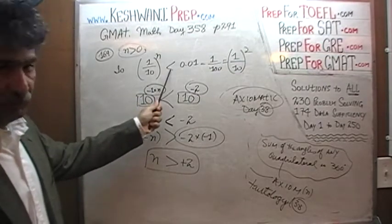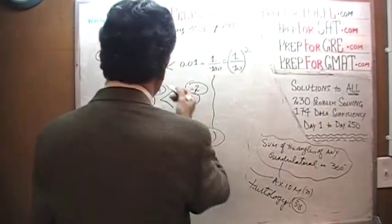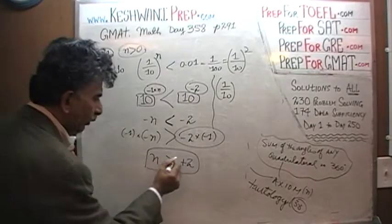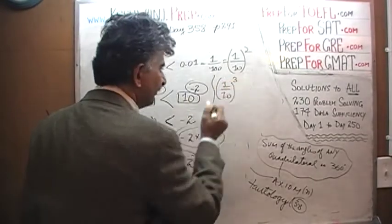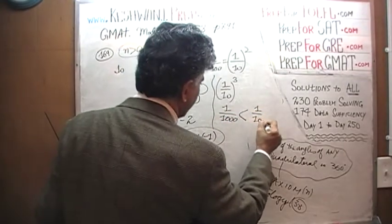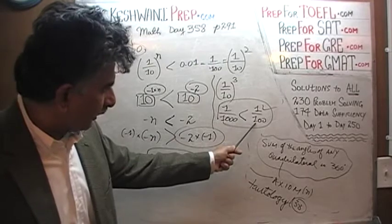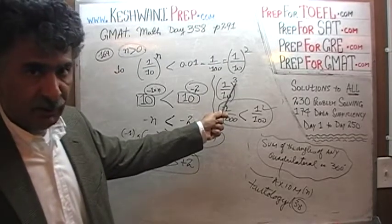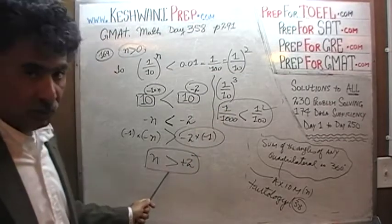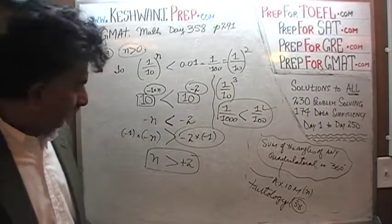Because if N happens to be more than 2, then the original inequality will be true. For example, if N is 3, then 1 over 10^3 is 1 over 1,000, and 1 over 1,000 is in fact less than 1 over 100. As long as N is more than 2, this fraction is going to be smaller than that fraction.